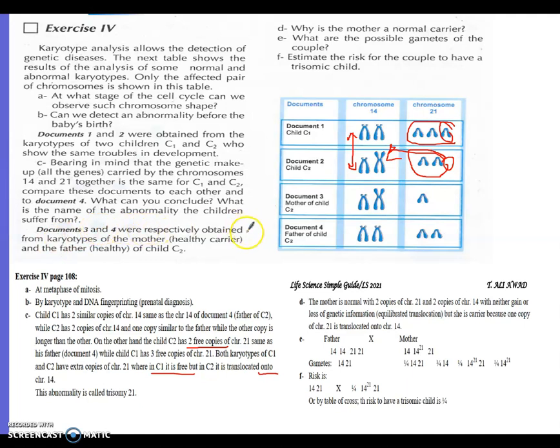What can you conclude? Both have trisomy. What is the name of the abnormality the children suffer from? The abnormality is called trisomy 21.